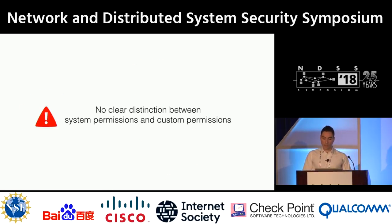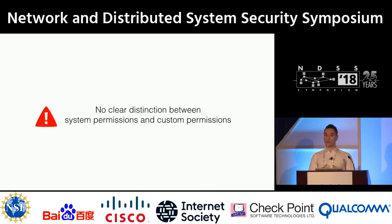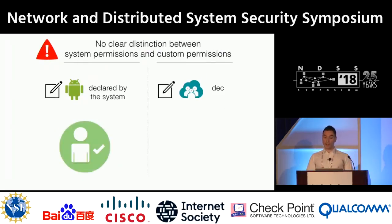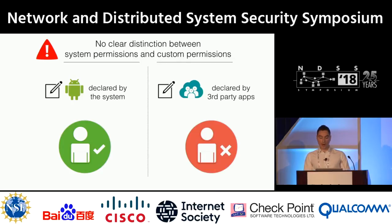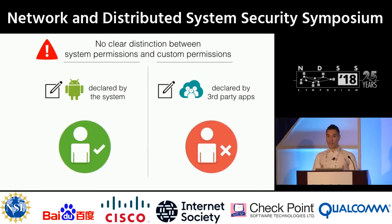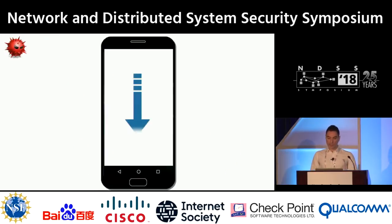However, when studying the permission model, we found that there is no clear distinction between system-defined permissions and custom permissions. Essentially, the Android framework is completely oblivious to the source of a permission. This treatment is at the very least hazardous, since system permissions are declared by the system itself — a privileged principal — whereas custom permissions are declared by untrusted third-party applications. We found that the Android permission model does not take this important distinction into account when making enforcement decisions, and of course when you do that, things start to go wrong.